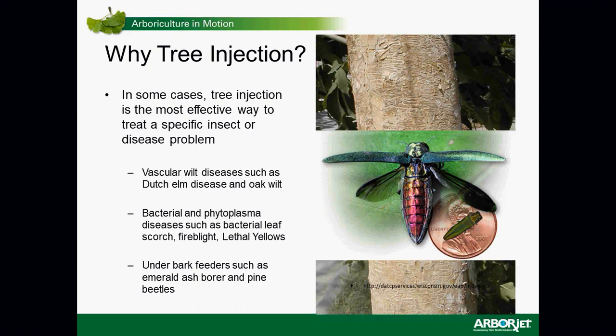Oak wilt is another example. There are bacterial and phytoplasma diseases — things like lethal yellows, Texas Phoenix palm decline, which was recently introduced from Texas into Florida and has spread rapidly. Another systemic disease includes bacterial leaf scorch and fire blight.